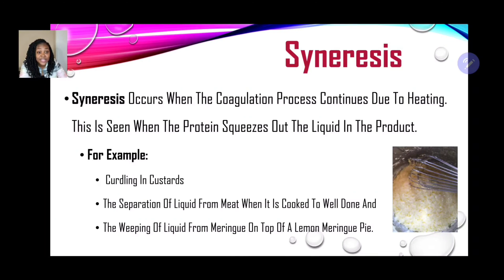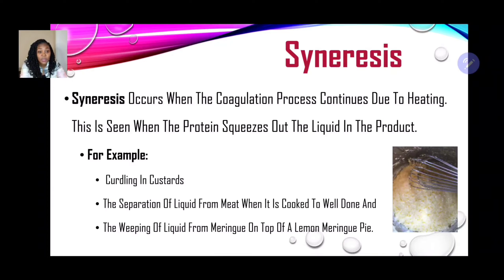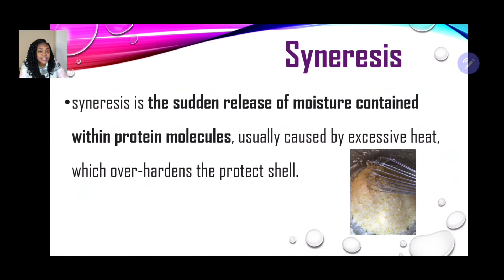Syneresis occurs when the coagulation process continues due to heat. So the process is: first the egg denatures, then it coagulates, and if cooking continues, syneresis takes place. This is seen when the protein squeezes out or oozes liquid — for example, curdling in custards, separation of liquid from well-done cooked meat, and weeping of liquid from a meringue on a lemon meringue pie. Syneresis is the sudden release of moisture contained within the protein molecules.